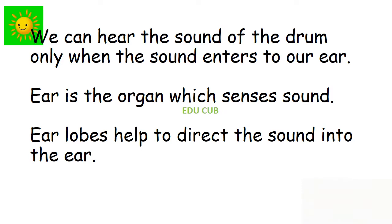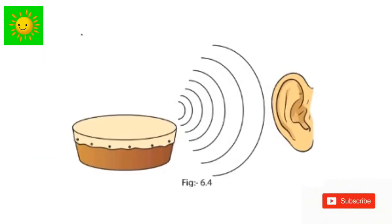Now you can understand that when the ears are closed, you can't hear the sound of the drum. We can hear the sound of the drum only when the sound enters to our ears. Ear is the organ which senses sound. Earlobes help to direct the sound into the ears. You can see how sound enters to our ears and how earlobes are collecting the sound.